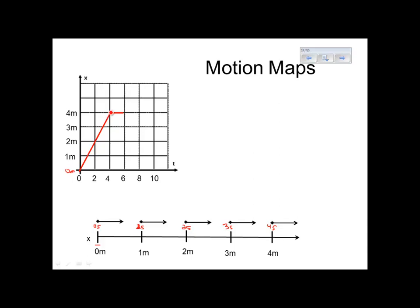So now the object stays at four meters. It stops, comes to rest. And so we have to show on our motion map that it stays at the same position for a total of two more seconds. So this is what we do. We put one dot to show that it stays there for one second, and an additional dot to show that it stays there for a total of two seconds. So we can say that this dot is after five seconds has passed, and this dot, the object is at that position of four meters at six seconds.